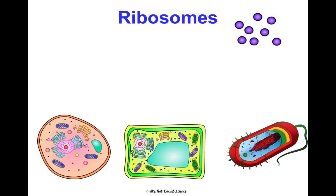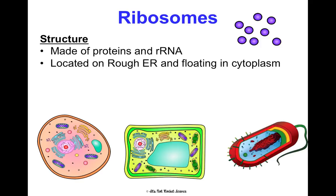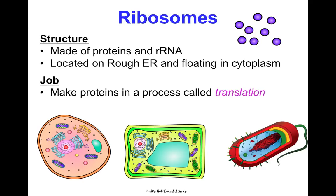Ribosomes are extremely important. They're made of proteins and rRNA. They're located in two places: stuck on the rough ER, or floating freely in the cytoplasm. Their job is to make proteins in a process called translation, which is the second step of protein synthesis. You can see them floating around or attached to the rough ER in eukaryotic cells, and in prokaryotic cells they're just floating around since there's no rough ER.